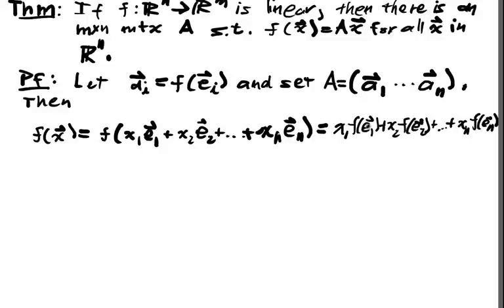But we named what these guys are, right? These are just our a_i's and so this is x1 a1 plus x2 a2 plus